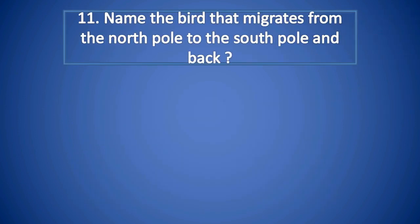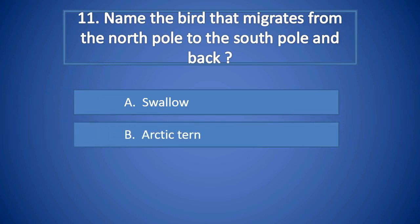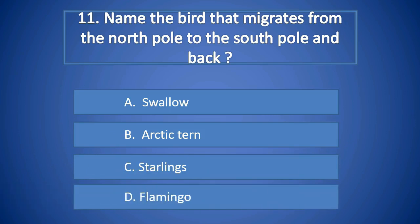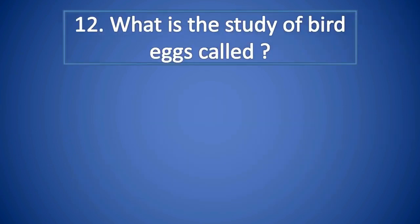Question Number 11: Name the bird that migrates from the North Pole to the South Pole and back. A. Swallow, B. Arctic Tern, C. Starlings, D. Flamingo. Right answer is B. Arctic Tern.